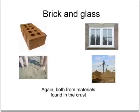Brick and glass are also materials used in house building. Brick is made from clay, which is shaped and then fired in large kilns to make brick. Whereas glass is made largely from sand, which is heated to very high temperatures with other chemicals to make glass. Both these raw materials therefore come from the earth's crust.